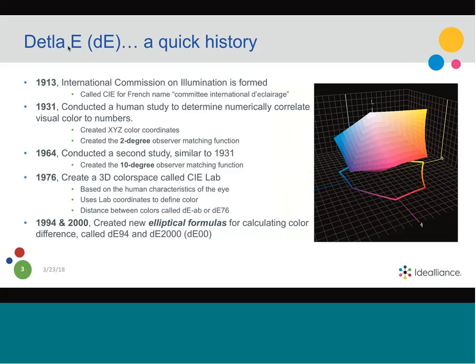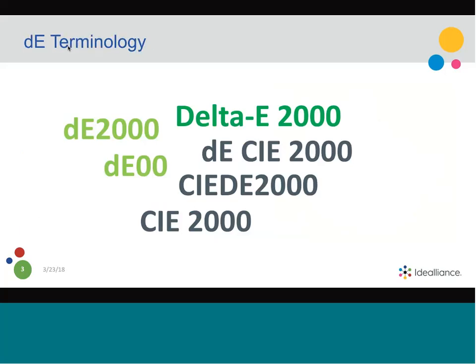In 1994 and 2000, studies continued because although it was nice to have a numeric difference, the eye had sensitivities that didn't really show up in the numbers — a regular Delta E didn't always correlate to what you're seeing, which compromises its usability for brands and printers as a way to specify and manage color. Delta E 2000 is the conventional way to talk about it, but when written it's abbreviated as DE 2000 or DEOO. You may also see it as DE CIE 2000 or CIE DE 2000 — it's all the same thing.